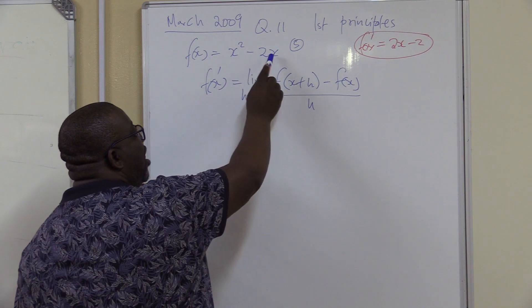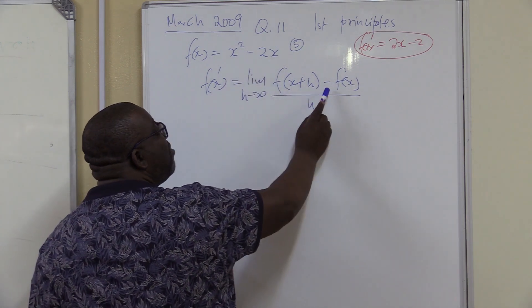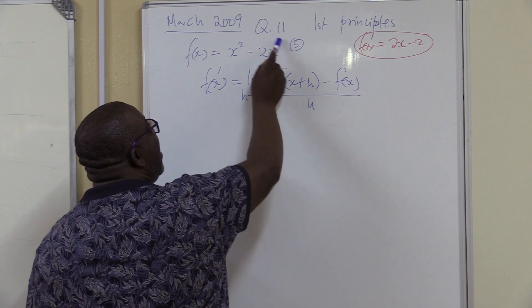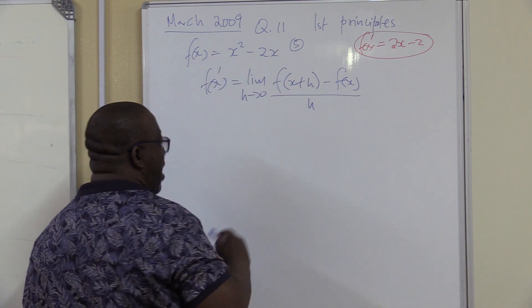So I'm going to put x plus h here and x plus h here. Once I'm done with x plus h, I'm going to subtract f(x). And this is f(x).